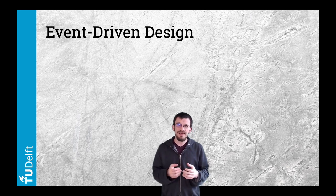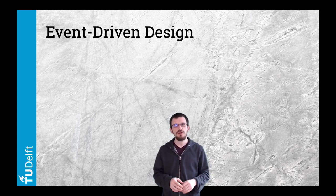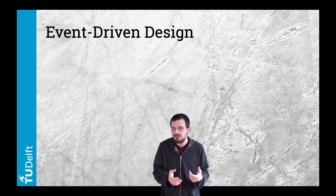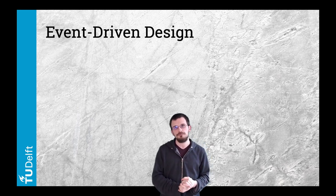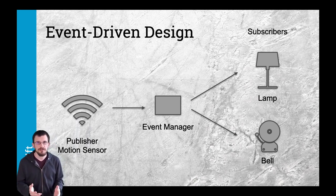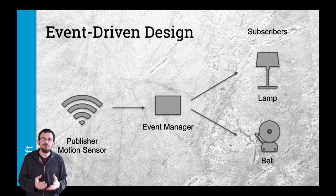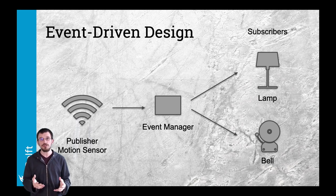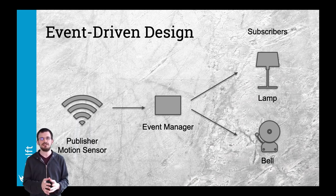Object-oriented design is often combined with event-driven design, especially when designing software-based products that interact with the physical world or that are distributed over a network. As we discussed in use case, activity, and sequence diagrams, we've already touched on events and triggers. In software, an event is a runtime operation — something that takes place when the system is running. It is executed by a software element to share information, which can be as simple as the event itself having occurred. It is made available for potential use by software elements not specified by the operation. In our doorbell example, the presence of a visitor can be detected from a motion sensor or directly by the doorbell button being pressed.